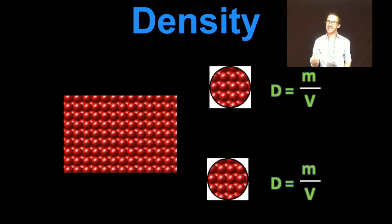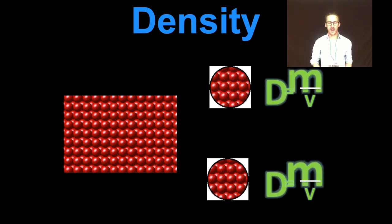Two equal volumes. Because it's the exact same substance in the same phase, the mass and volume values are the same. Therefore, the density is also the same.